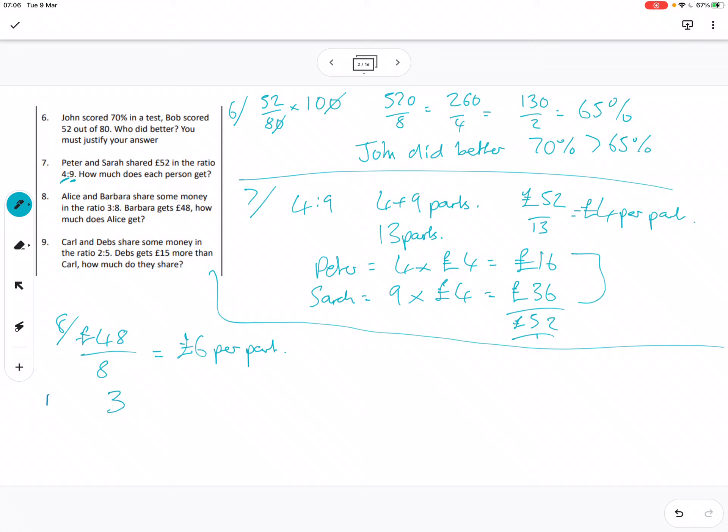Last up, number 9: Carl and Deb share some money in the ratio 2 to 5. Deb gets £15 more than Carl, how much do they share? So Deb's take minus Carl in terms of their share, it's £15. Deb gets 5 shares, Carl gets 2, so 5 minus 2 equals 3 parts.